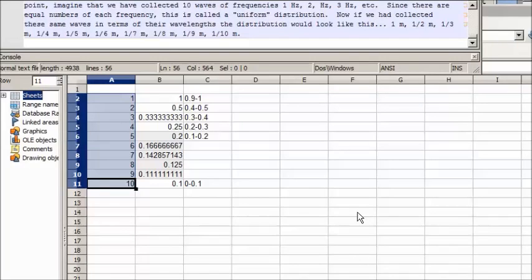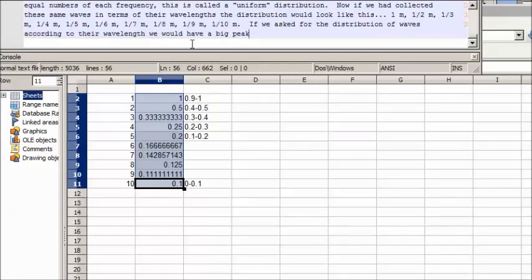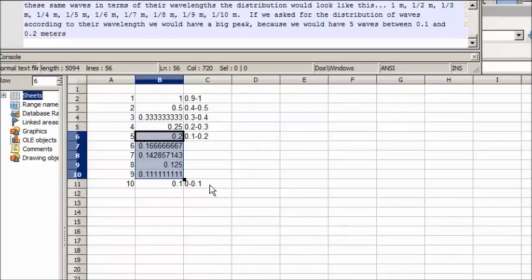Now, if we had collected these same waves in terms of their wavelengths, the distribution would look like this. 1 m, 1/2 m, 1/3 m, 1/4 m, 1/5, 1/6, 1/7, 1/8, 1/9, and 1/10 of a meter. If we asked for the distribution of waves according to their wavelength, we would have a big peak. Because we would have 5 waves between 0.1 and 0.2 meters. And there would be no waves at all between 0.6 and 0.9 meters.